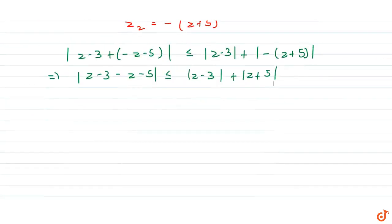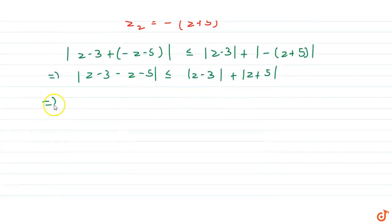So, from here we get from the left hand side, we will get mod of minus 8 is less than or equals to mod of z minus 3 plus mod of z plus 5.